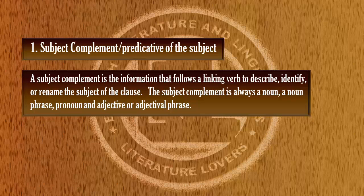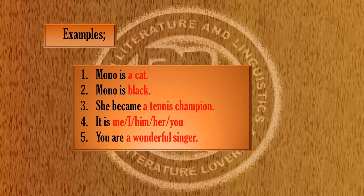Look at these example sentences. 'Mona is a noun phrase' — 'a noun phrase' is a noun phrase complement. 'Mona is black' — 'black' is an adjective that describes Mona. 'She became a tennis champion' — 'a tennis champion' is a noun phrase that describes and renames 'she'.